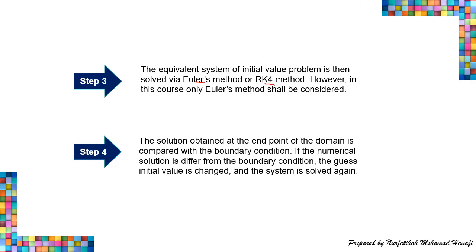Step three: the equivalent system of initial value problems is then solved using Euler's method or RK4 method. However, in this course, only Euler's method shall be considered. Step four: the solution obtained at the end of the domain is compared with the boundary condition. If the numerical solution differs from the boundary condition, the guessed initial value is changed and the system is solved again.